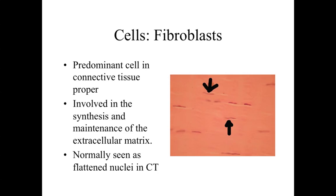With the connective tissue we're going to be looking at scattered cells. The predominant cell found in connective tissue proper — the majority of what we'll be looking at in this course — are going to be the fibroblasts. These are the cells involved with synthesizing and maintaining the extracellular matrix. We know we're looking at connective tissue because we can see the nuclei — hard to see the cells themselves — but we can infer the cells are around them, with lots of pink staining in between representing collagen fibers and other proteins of the ground substance.